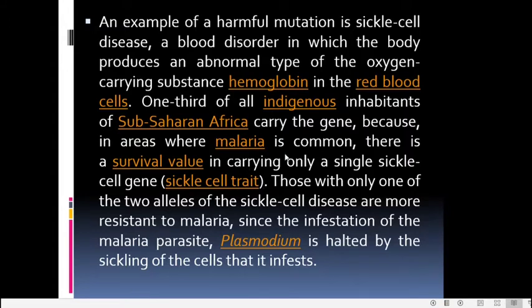However, those who are homozygous for the sickle cell allele (HbS/HbS) face a lethal condition, because all their RBCs are sickle-shaped, leading to severely impaired oxygen transporting ability.